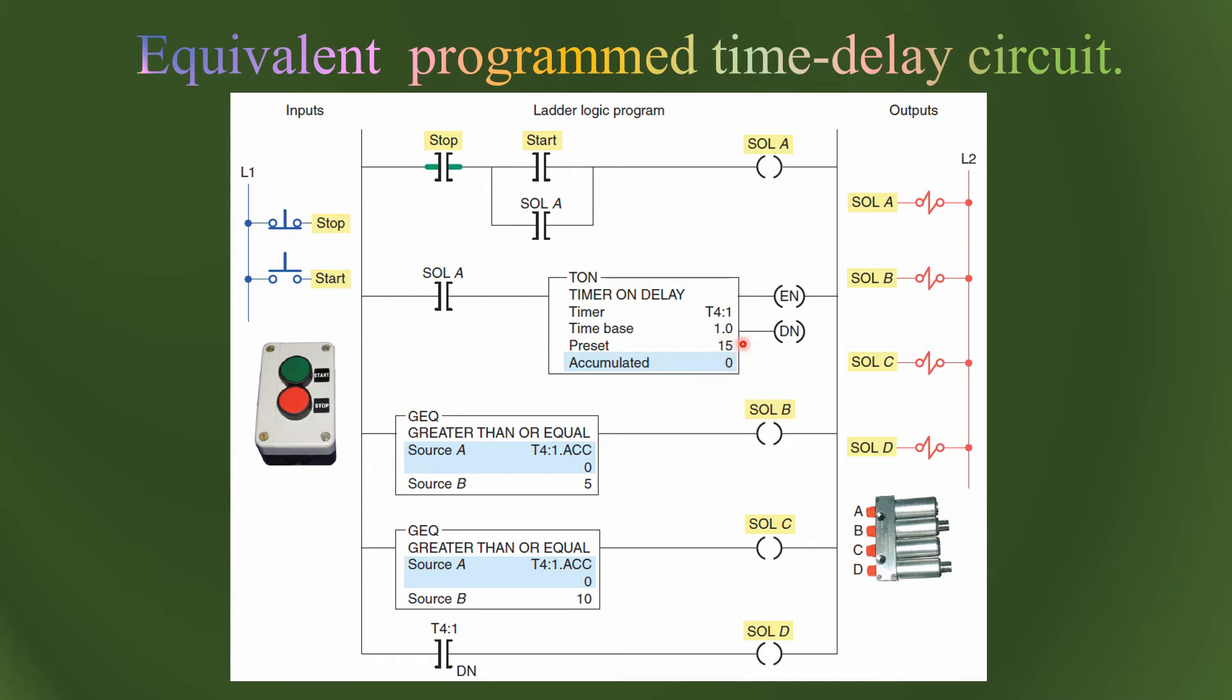This single timer is going to make a five-second difference for the rest of the solenoids. When this timer runs for five seconds, the preset time is 15, so after the first five seconds, solenoid B will be activated. After ten seconds, solenoid C will be activated. We don't need a greater than or equal logic for the third one. When the timer becomes 15, after 15 seconds the third one will become on.